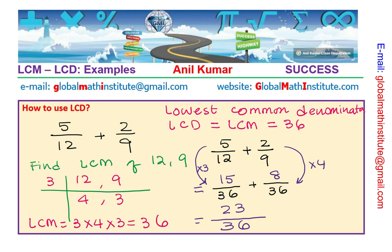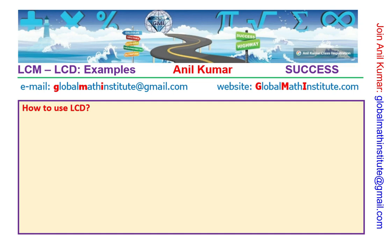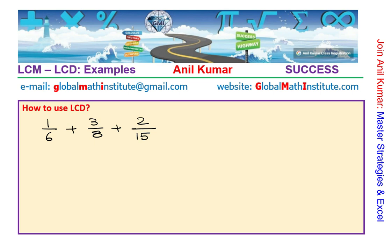So we get 23 over 36 as the addition of these two fractions. The process is: find the lowest common multiple of the denominators, use it as the lowest common denominator for adding or subtracting fractions — that is the application. Now let's take one more example. What happens if we have a fraction with three terms to be added? For example: 1 over 6, plus 3 over 8, plus 2 over 15.